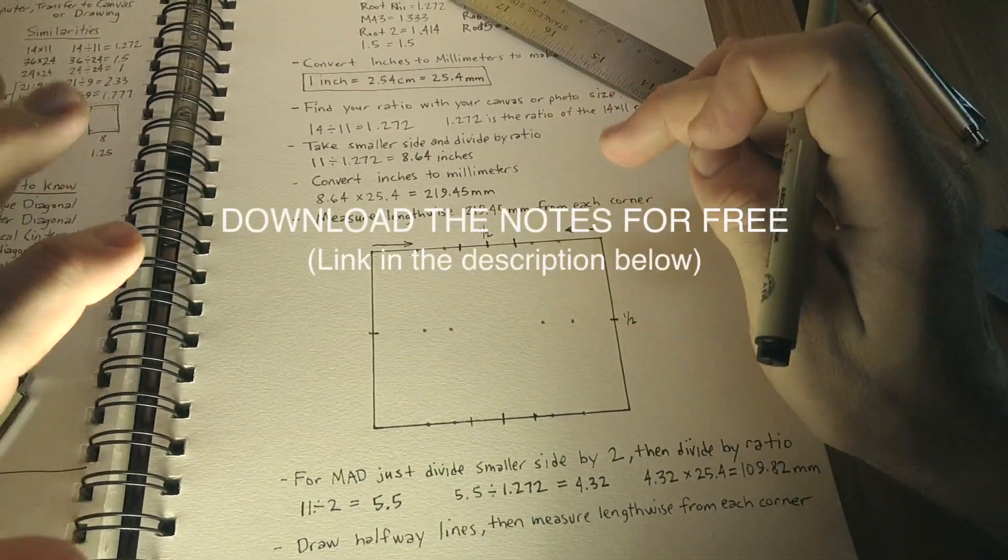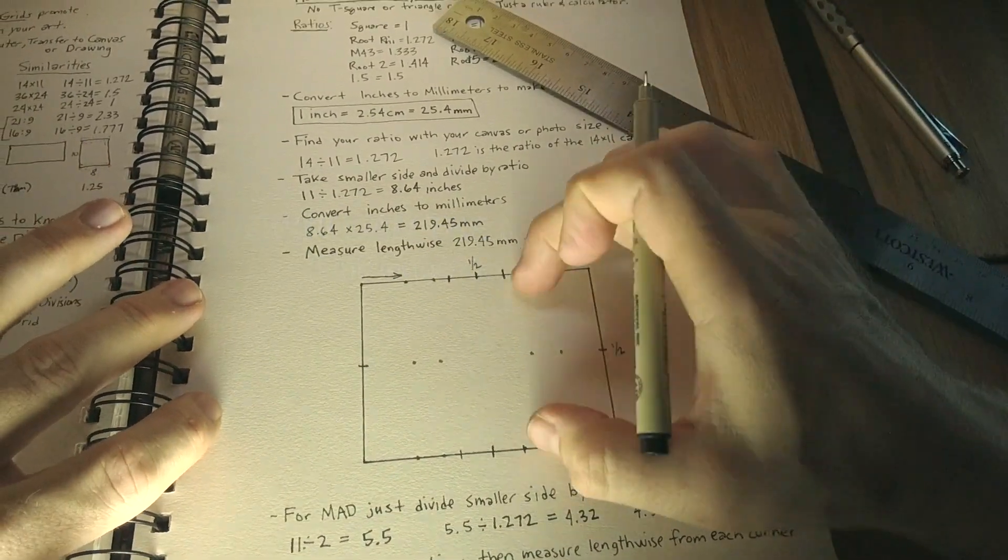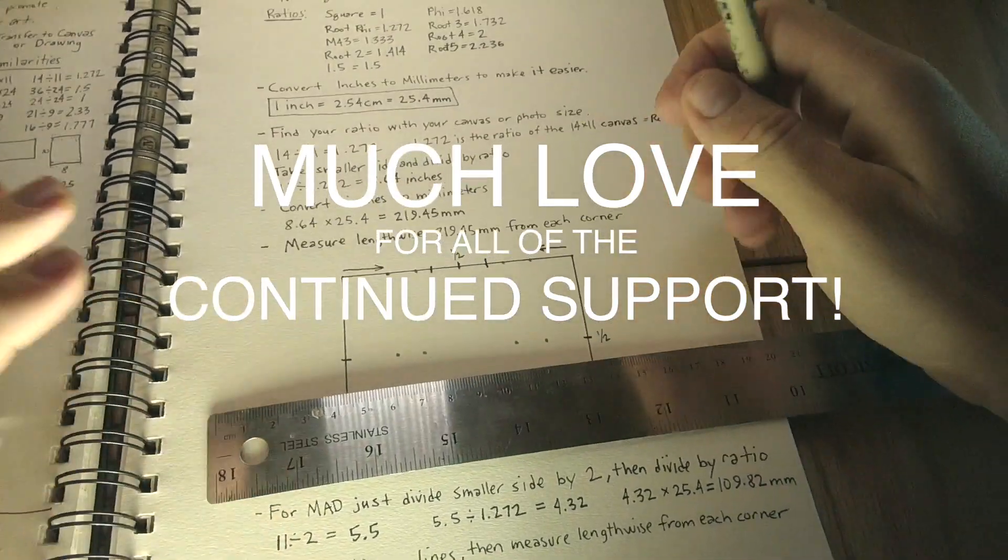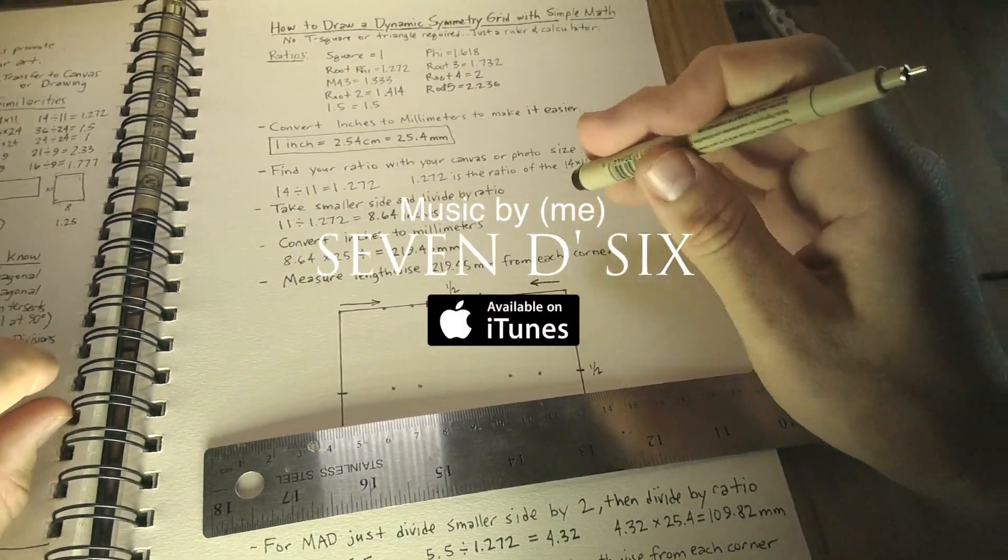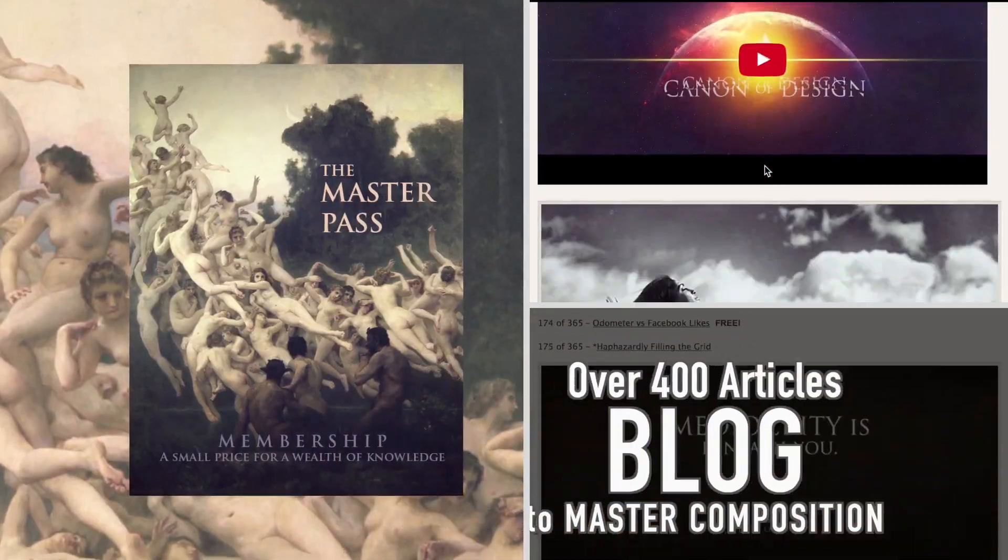So that's it. Now you can draw your basic armature and your major area divisions with just some simple math, a little pen, pencil, and a straight edge ruler. So that's it. If you guys like this, subscribe, like, and it'll let me know that you want to see more of this stuff. All right, take care. Thank you.